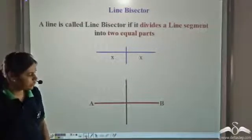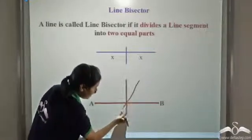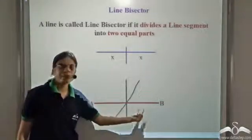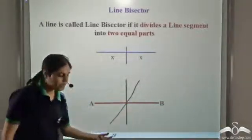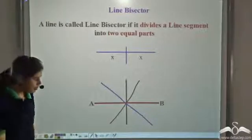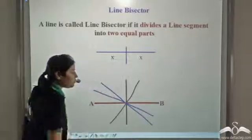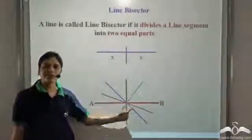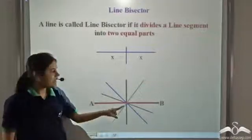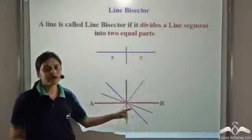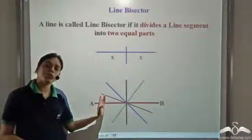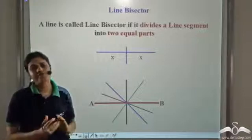An important thing to note: we can draw many lines passing through the midpoint of AB. Are all these lines bisectors of AB? Yes — any line which passes through the midpoint of a line segment is a line bisector of that line segment. So a line bisector is not unique; for a given line segment we can have many line bisectors.